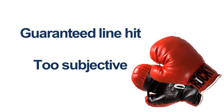Now, there are two knocks against Fibonacci. Number one, as you draw a bunch of lines, one's probably going to get hit. The second one: it's too subjective — which highs and lows to use. I agree with both of them. However, we're going to be using three lines — you could use two — and our highs and lows are simple to spot. I'm going to detail that later.